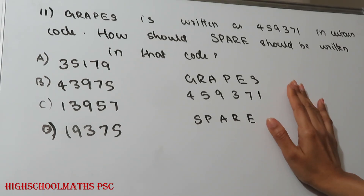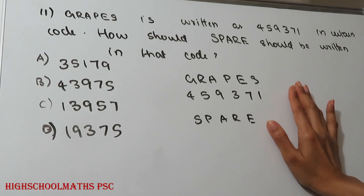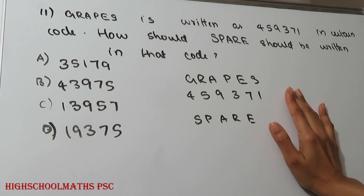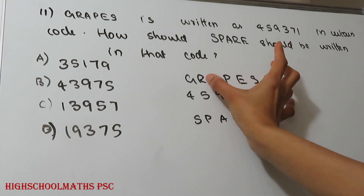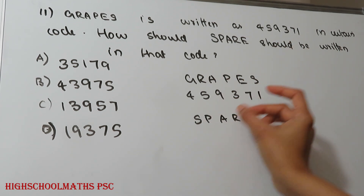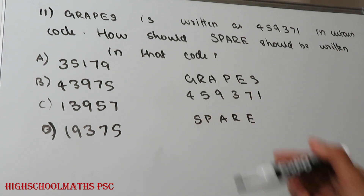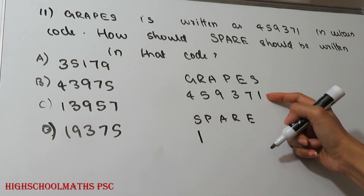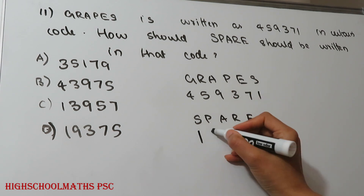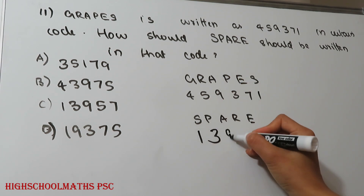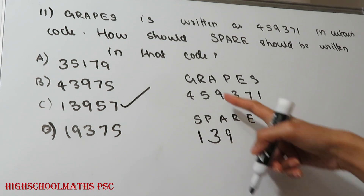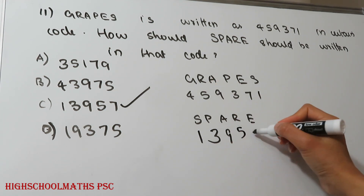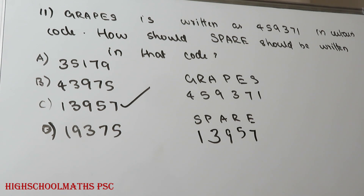11th question. Grape is written as 459371 in a certain code. How should 'spare' be written in that code? Mapping each letter of GRAPE to its code digit: G=4, R=5, A=9, P=3, E=7, then S=1. Using the same mapping for SPARE, the coded answer is derived. Option is the right answer.